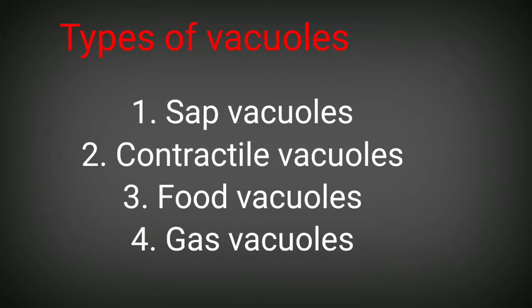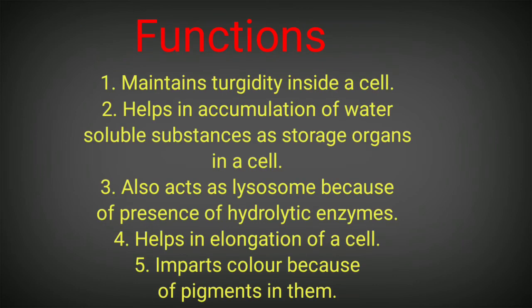The functions of vacuoles include: first, they maintain turgor of the plant cell. They help in maintaining the turgor pressure, which is required in the leaves, twigs, and woody tissues so that the cell can maintain its turgidity. Vacuoles play a very important role in the plant cell and are part of the tissues present in leaves, twigs, etc.